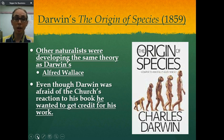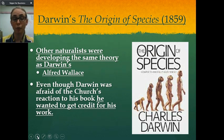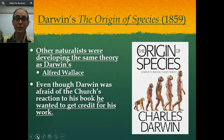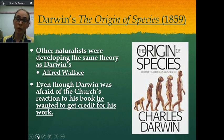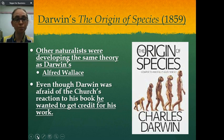He was scared to publish. What made him finally decide to publish was meeting another scientist called Alfred Wallace. Alfred Wallace was developing the same theory as Darwin and was going to publish his findings. Darwin wanted to get credit, because in science, the first person to publish is the one who gets credit. Almost everyone knows the name Darwin — how many people know who Alfred Wallace is? Not many. So Darwin went ahead and published his book before Alfred Wallace could.